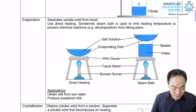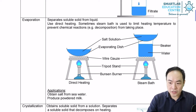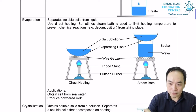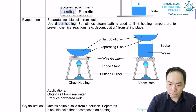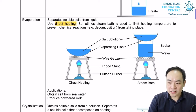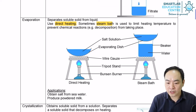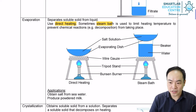In evaporation, we use direct heating. Sometimes a steam bath is used to limit the heating temperature, in order to prevent chemical reactions such as decomposition from taking place.